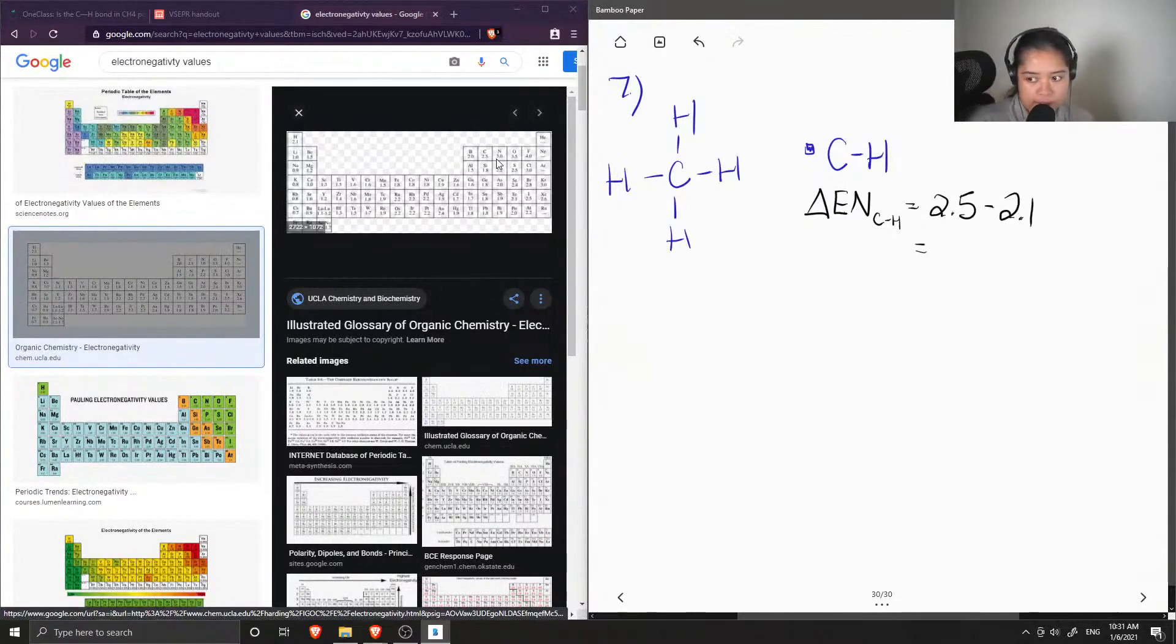So for their difference in electronegativity, it's only 0.4. Since the difference in electronegativity is less than 0.5, this means that the carbon-hydrogen bond is non-polar.